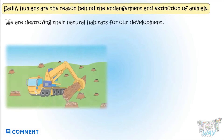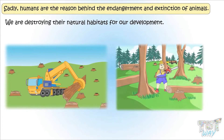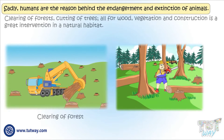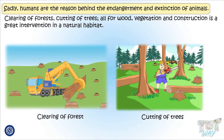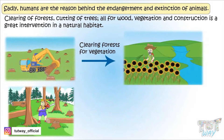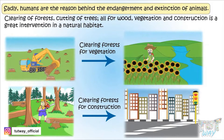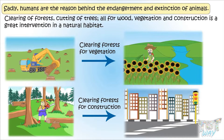We are destroying their natural habitat for our development — clearing of forests, cutting of trees, all for wood, vegetation, and construction. It is a great intervention in the natural habitats, and it is all destroying the natural habitats of animals, because of which animals are dying out.